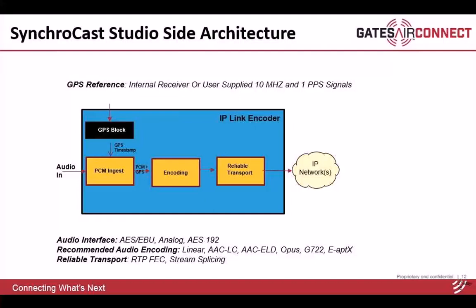Looking at the SyncroCast architecture on the studio side IP-Link: the GPS block provides the timing reference, sourced from either an internal or external GPS receiver. If using external GPS, both the 10 MHz and 1 PPS signals are supplied to the IP-Link. The PCM ingest block receives AES-192 audio samples from the input channel, marks them with a GPS timestamp, and sends both the samples and timestamp to the encoding block for optional compression, then on to the reliable transport block for packet protection using RTP-level FEC or stream spacing. Because samples are GPS-timestamped right at ingest, delays in all subsequent blocks — encoding, reliable transport — are all accounted for when calculating the end-to-end delay at the receiver.